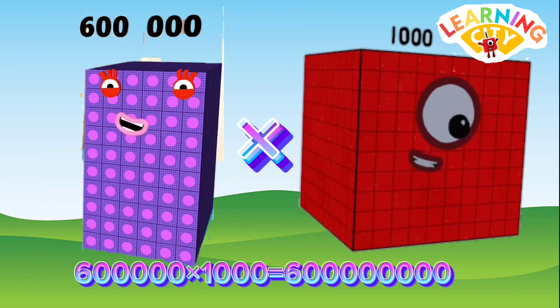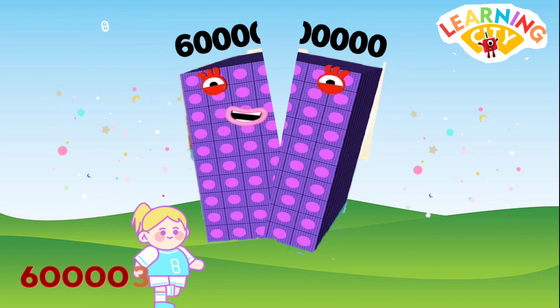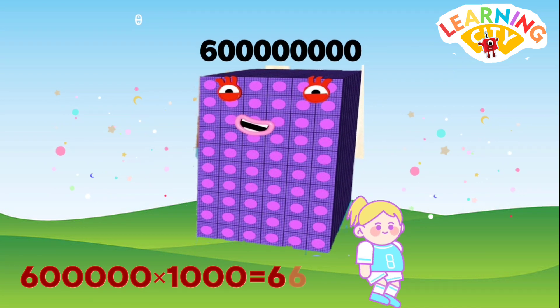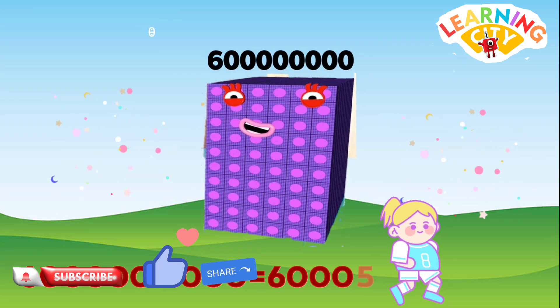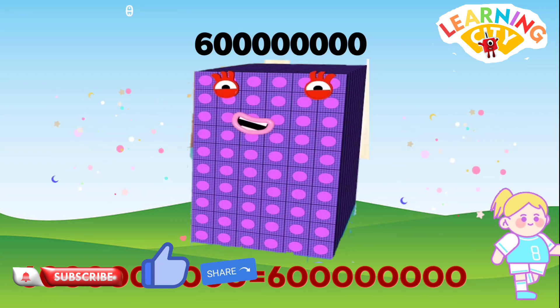600,000 multiply thousand equals 600,000,000.